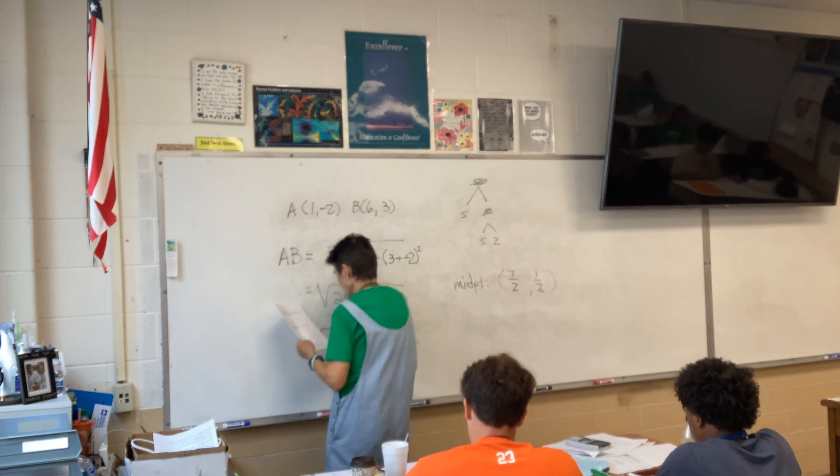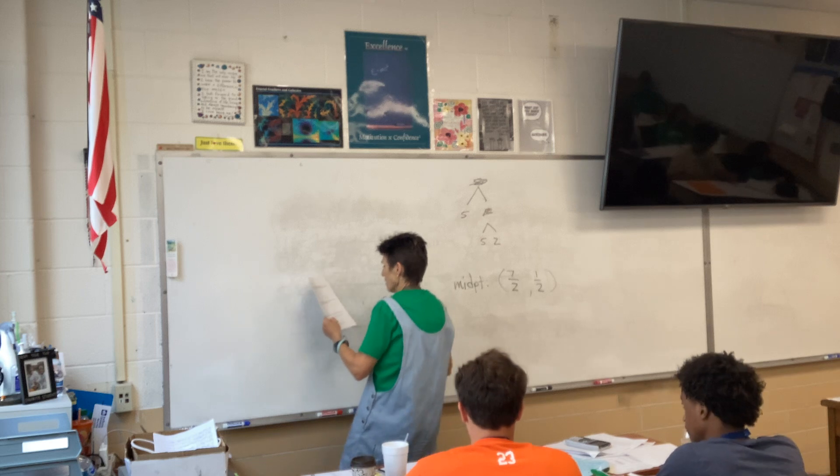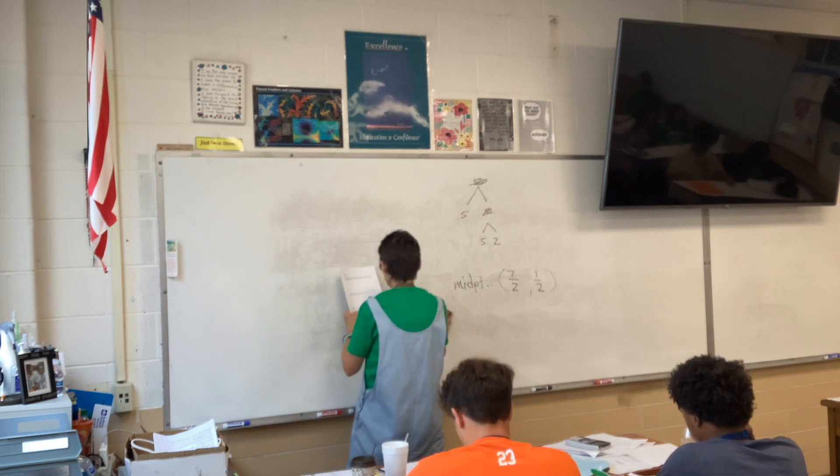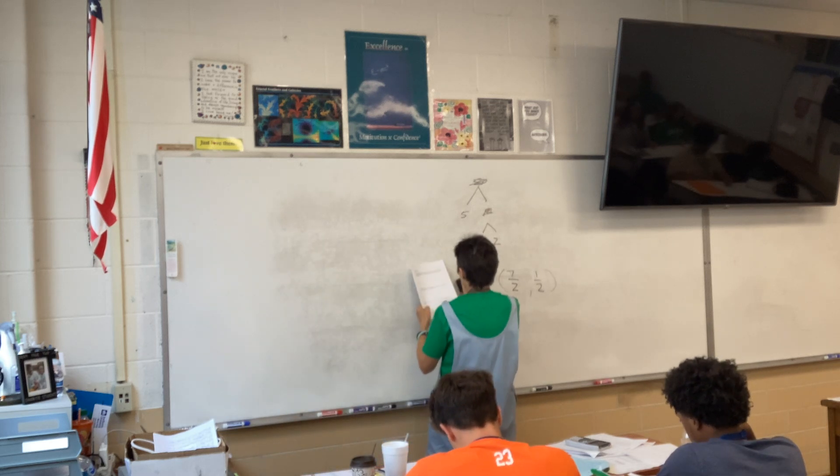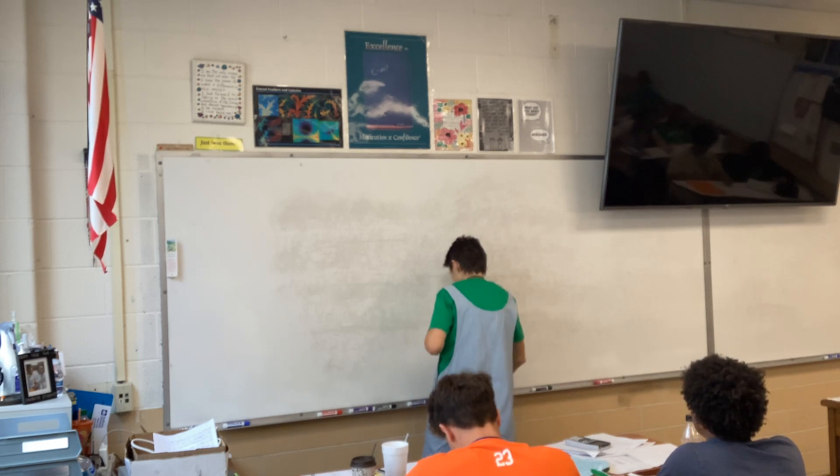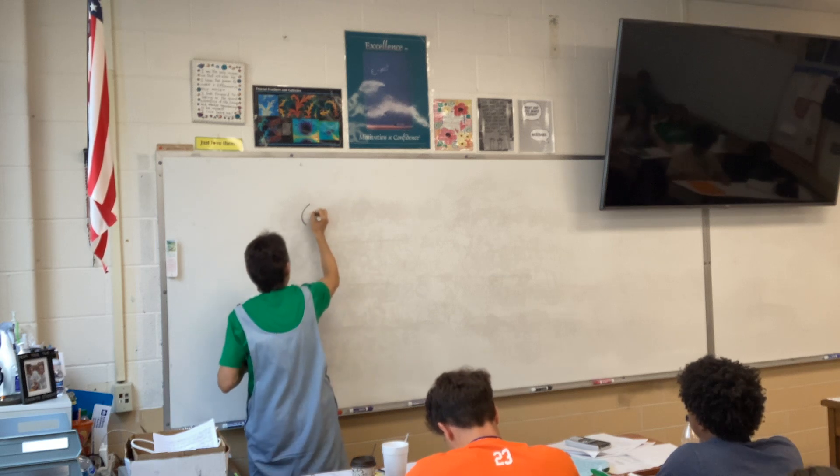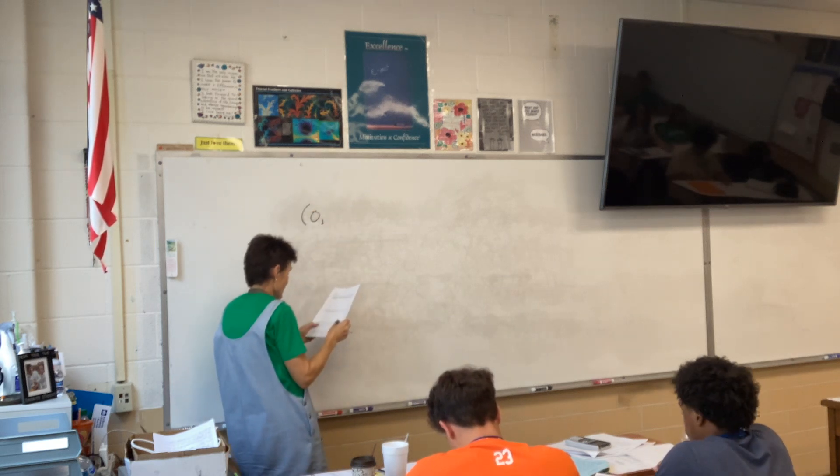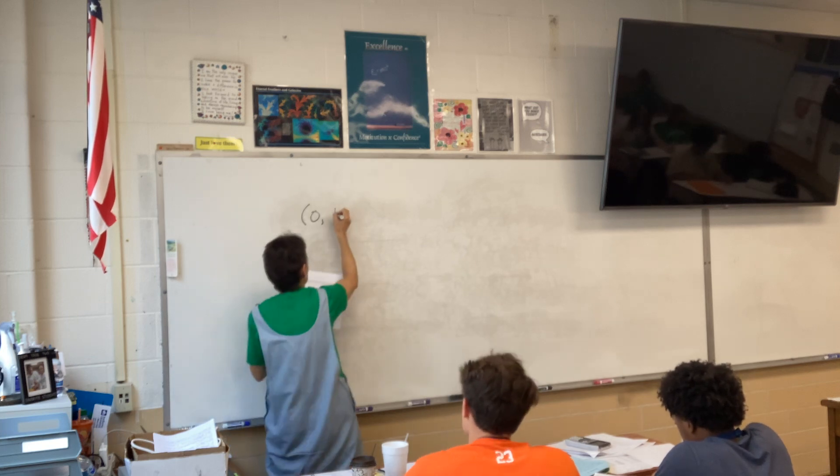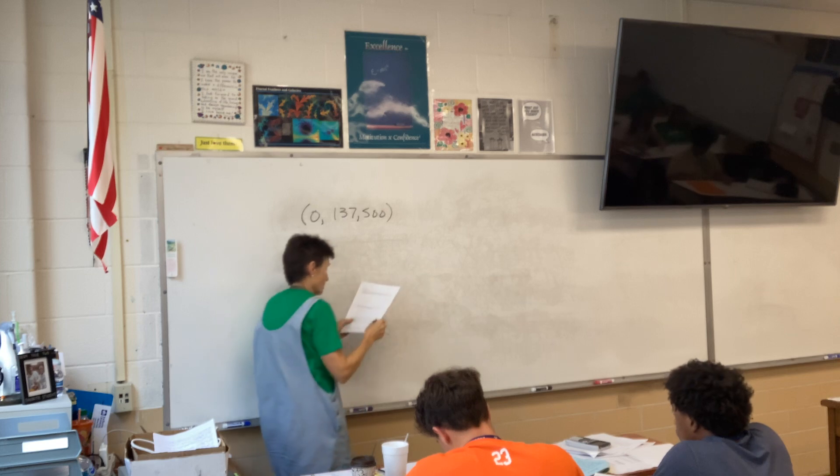Number three. The building was purchased eight years ago. This year it was appraised for this. Find a linear equation that represents the value of the building X years after purchase.